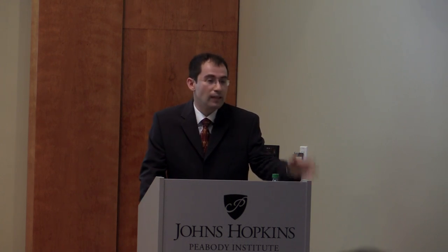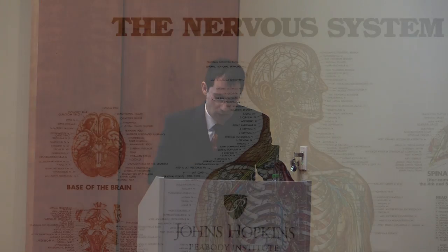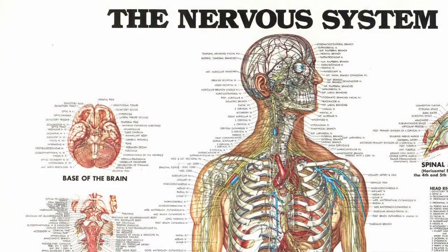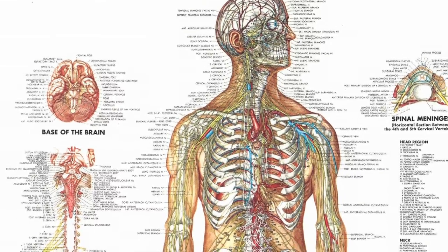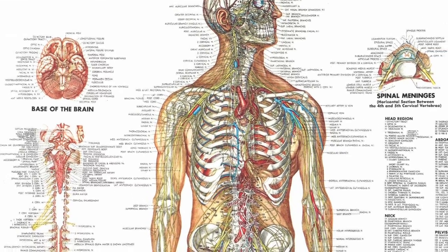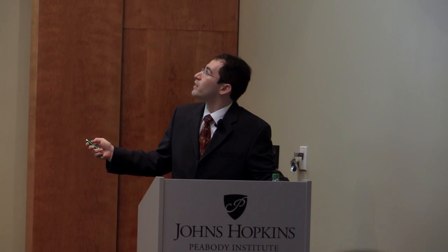The nervous system coordinates voluntary as well as involuntary actions and transmits signals to different parts of the body. We think about it in two parts: the central nervous system, comprising the brain and spinal cord, and the peripheral nervous system, which is nervous tissue outside of the CNS. It allows the CNS to communicate with the rest of the body, carrying signals to our limbs, extremities, and voice production.